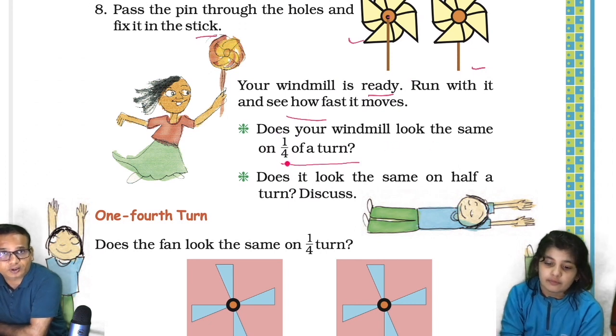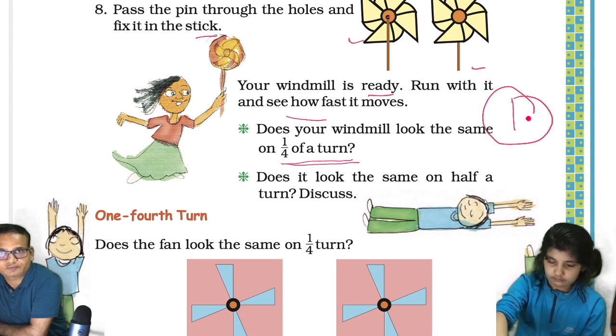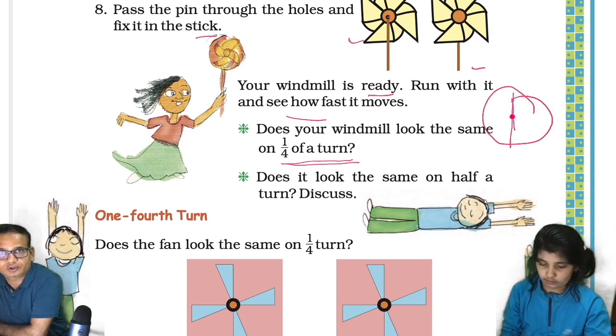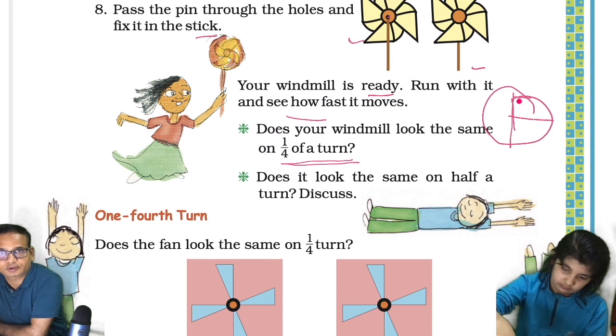Quarter of a turn - does your windmill look the same on a quarter of a turn? Quarter of a turn means, for example, this is a windmill, so you turn like this up to here, not half.